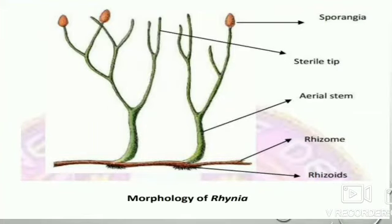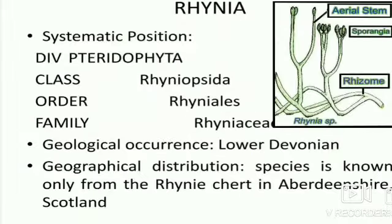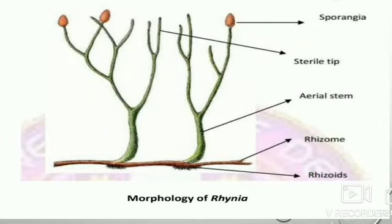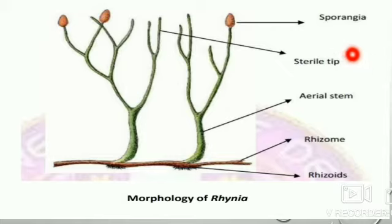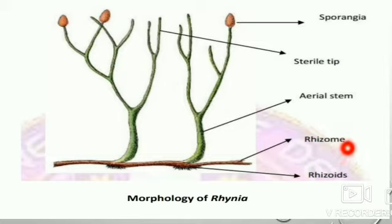Looking at the morphology diagram, you can see the complete plant body. The topmost structures are pear-shaped sporangia — these are the fertile tips. Below that is the sterile tip, then the aerial stem, then the rhizome, and at the bottom are rhizoids present on the lower side.